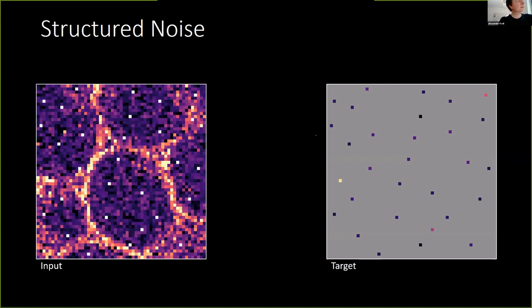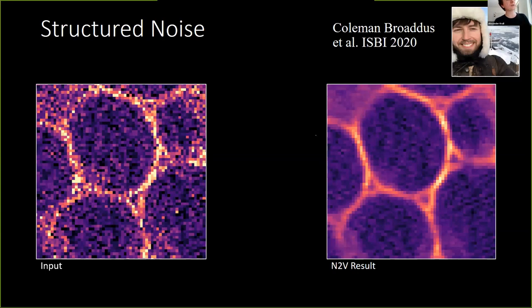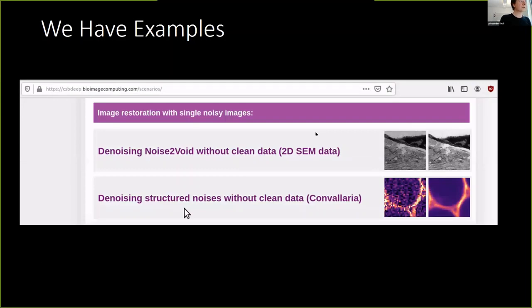In standard Noise2Void, we randomly select pixels and mask them in the input, calculating loss only for those pixels. If the noise is predictable from surroundings — which it is for structured noise — we get bad results. Coleman's solution: instead of masking just the single pixel, also mask a bigger area around it. With this approach you get much improved results for this type of data, as shown in comparison between standard Noise2Void and Structured Noise2Void. Examples are available on the CSBDeep website.